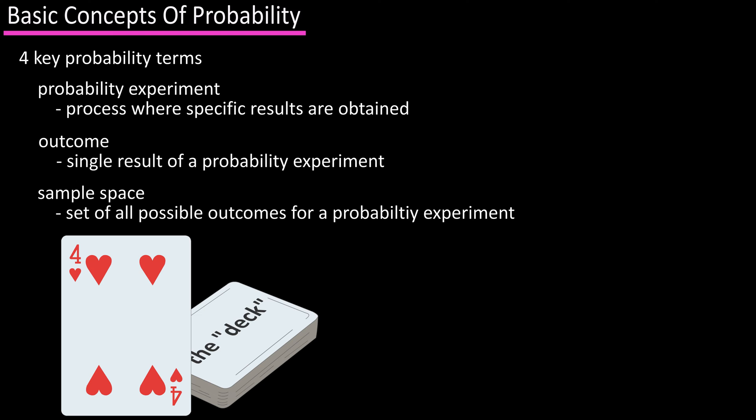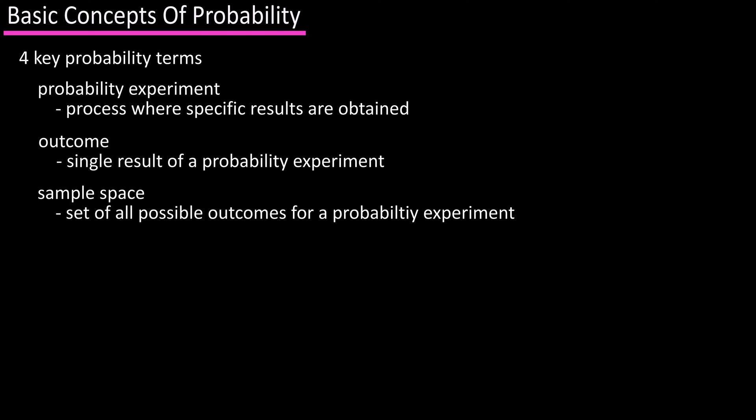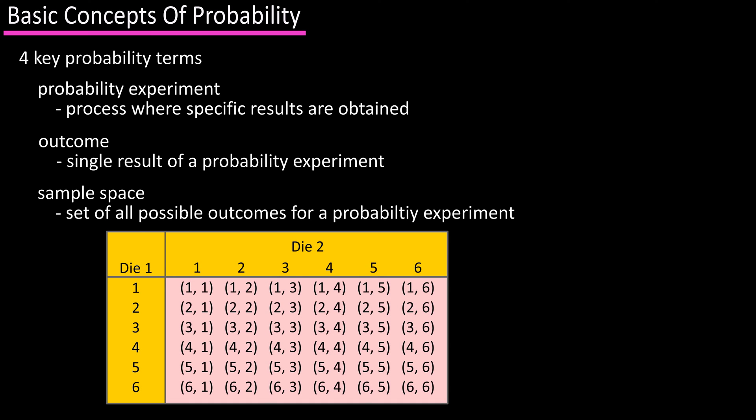It is the set of all possible outcomes for a probability experiment. For instance, the sample space for rolling two dice is here, and you can see the possible outcomes for die one and the possible outcomes for die number two, and the sample space is the pairs of numbers listed on the chart here. So there are 36 possible outcomes in this sample space.